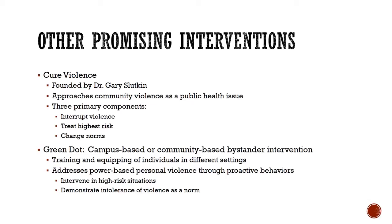Another promising intervention is called Green Dot—a campus-based or community-based bystander intervention model. This involves training and equipping individuals in different settings to be bystanders who interrupt violence and change norms of violence within a community. The Green Dot program addresses power-based personal violence through proactive behaviors, which may include intervening in high-risk situations, helping de-escalate situations where violence may occur, and demonstrating intolerance of violence.